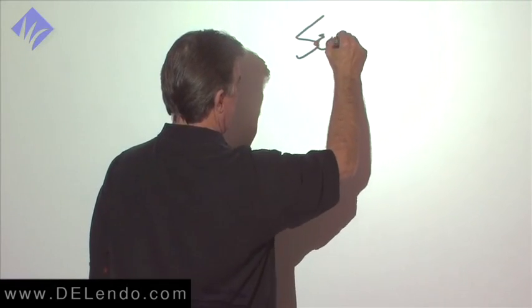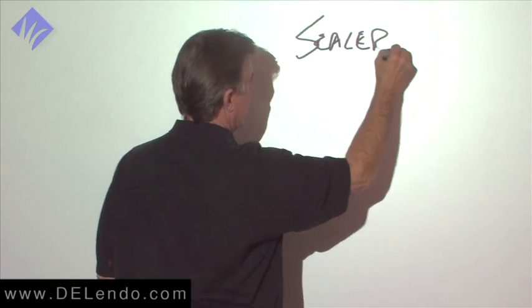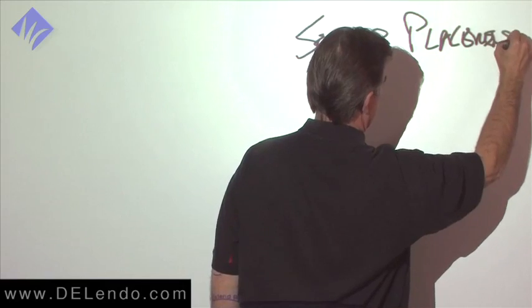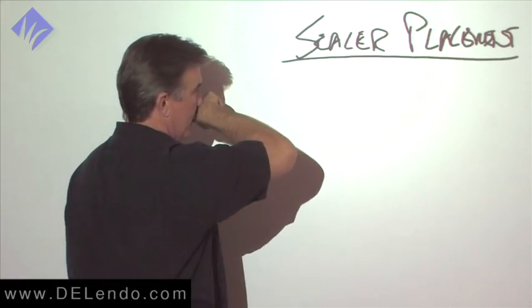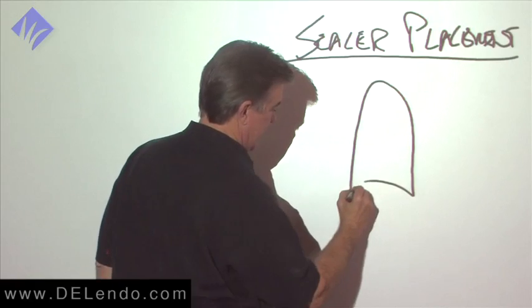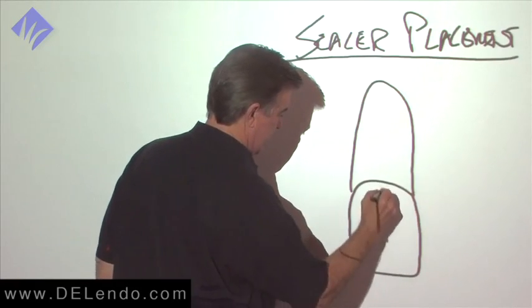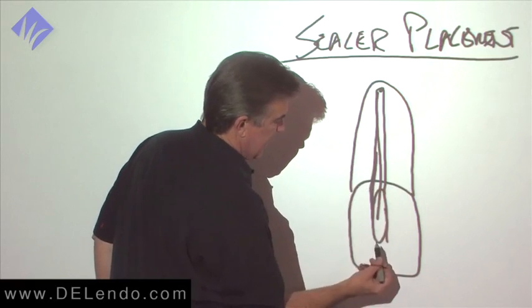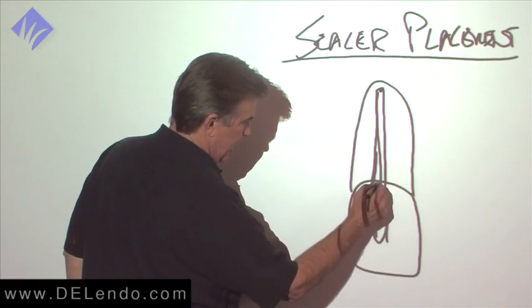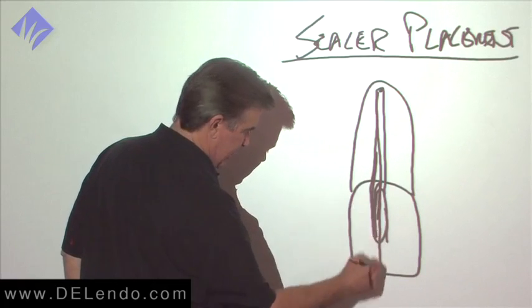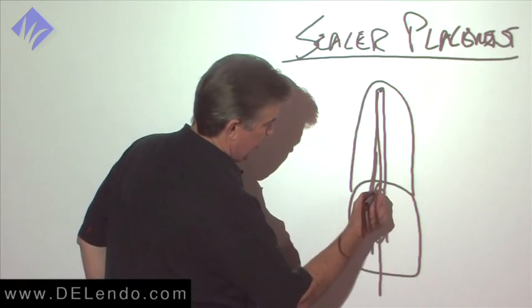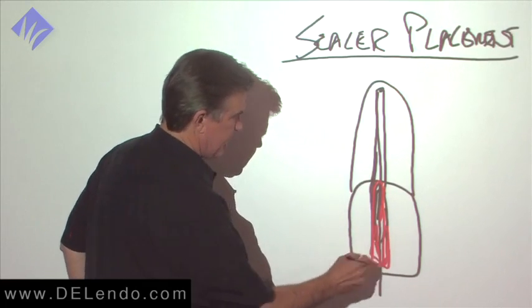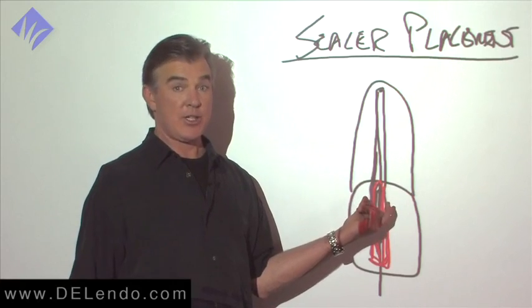The next aspect of this is sealer placement. With carriers, as soon as you put the carrier right to the orifice level, here it is, and the gutta-percha is alongside of it, out here, it's like this. We have effectively created a seal. It's like a squeegee.